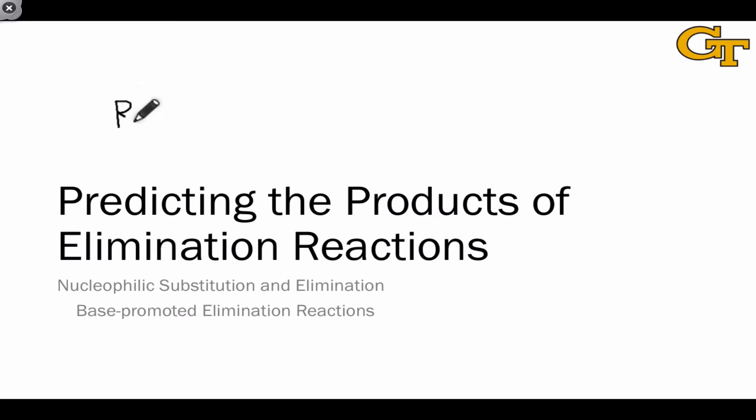This video focuses on predicting the products of elimination reactions when the electrophilic molecule contains two distinct sets of beta hydrogens. For example, where the left-hand beta carbon bears one hydrogen and the right-hand beta carbon bears two hydrogens, base-promoted elimination of HCl from this molecule could give rise to two isomeric alkene products.